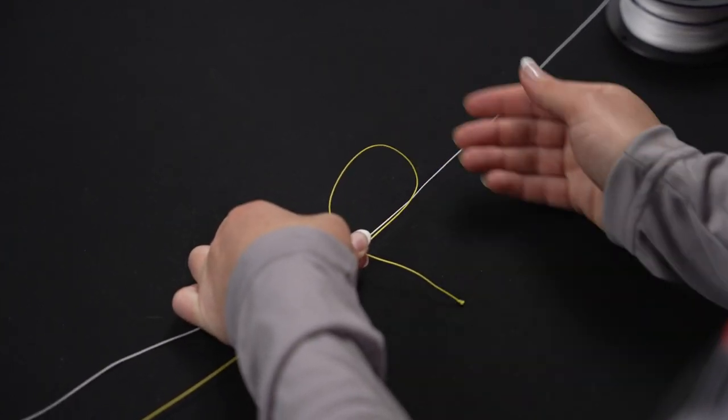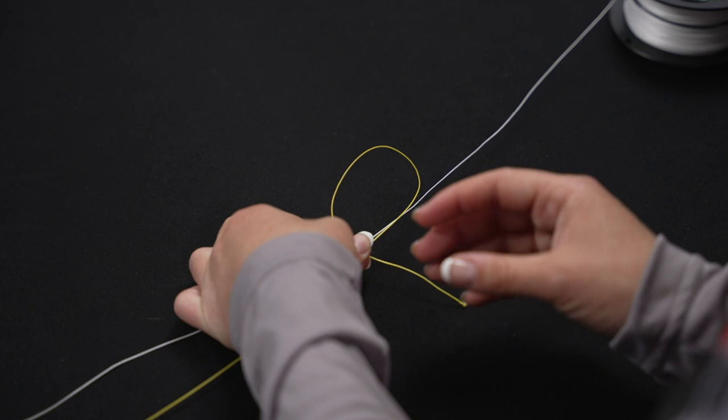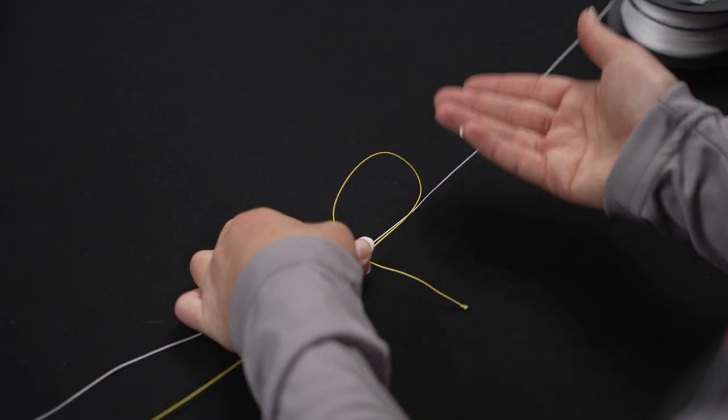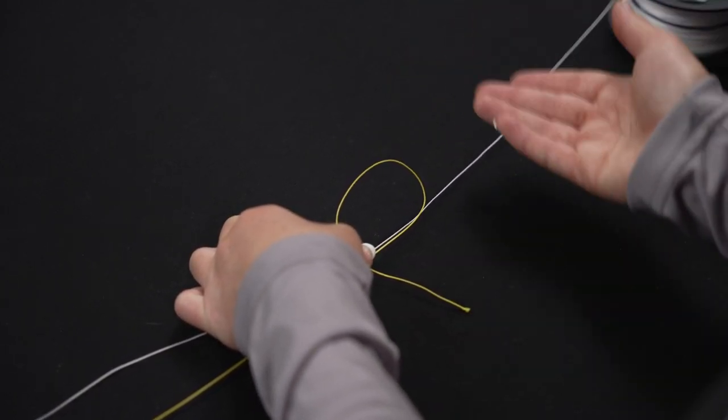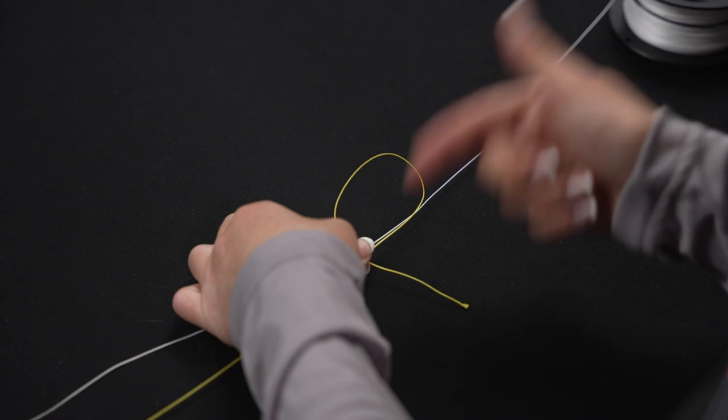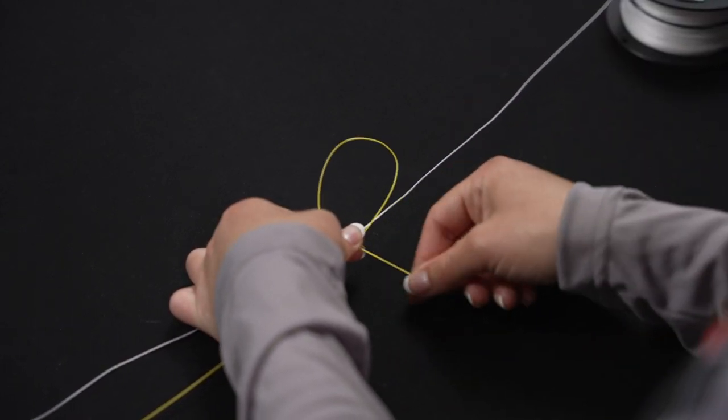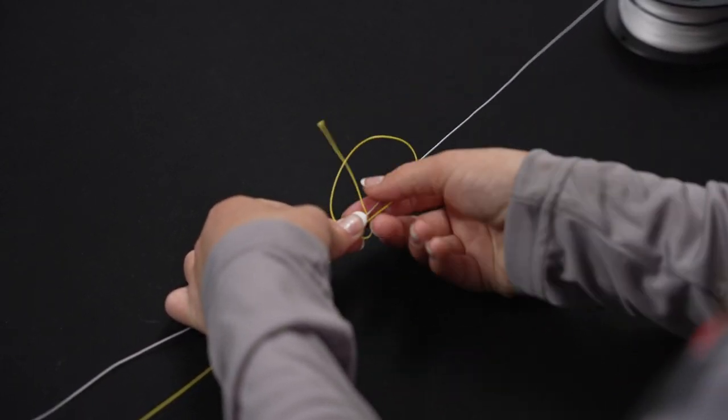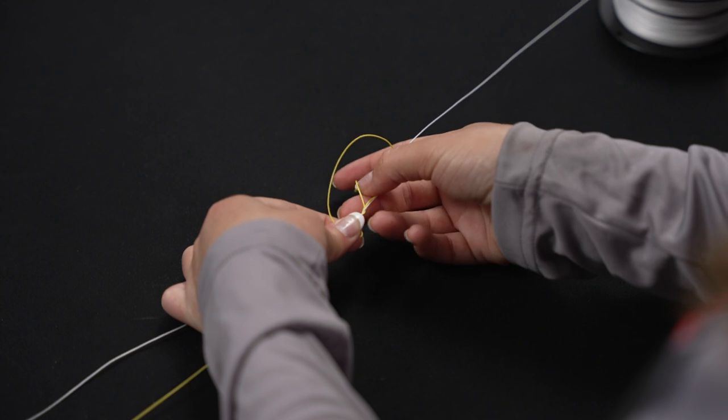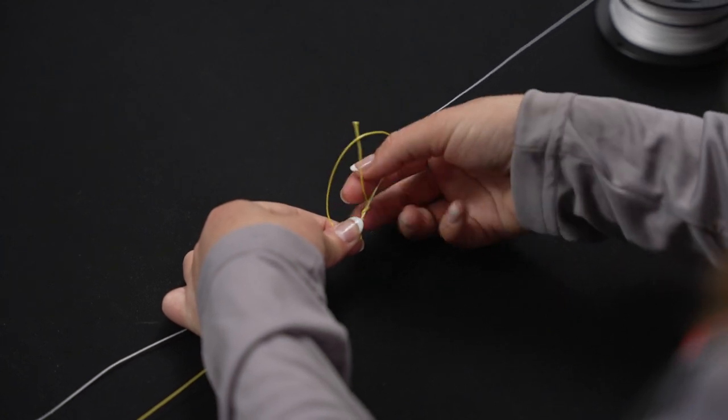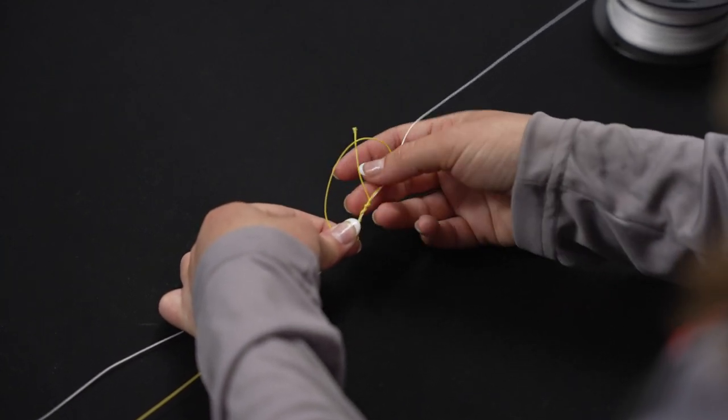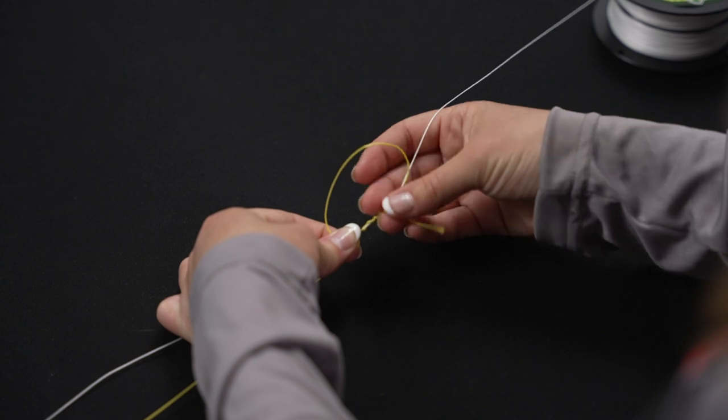For braid, you're going to want to do the most wraps on this side. It's totally preference as to how many wraps you want to make, but typically I'll do six on the right side and then we'll do half of that for the mono or fluorocarbon on the other side. So we're going to start off with six wraps right here. So we're going to go one, two, three, four, five, six.